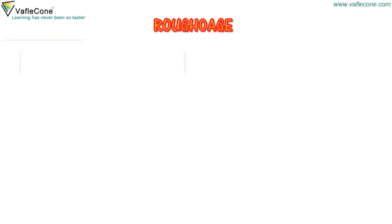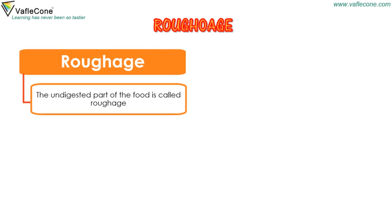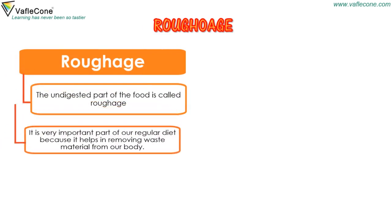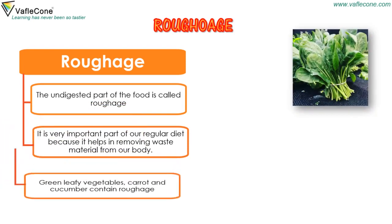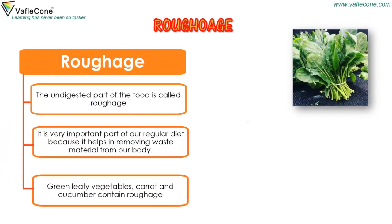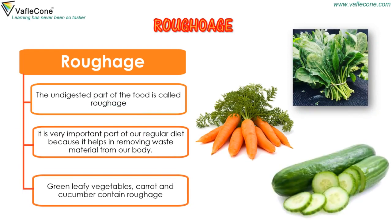The undigested part of food is called roughage. It is a very important part of our regular diet because it helps in removing waste material from our body. Green leafy vegetables, carrot, and cucumber contain roughage.